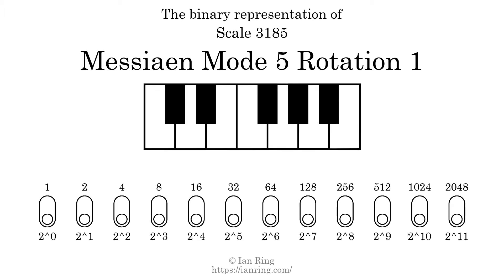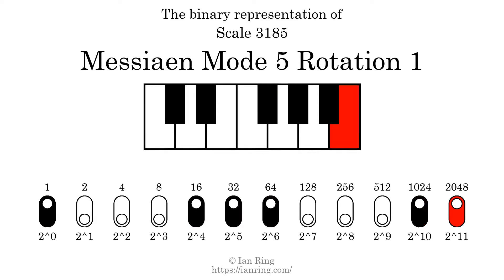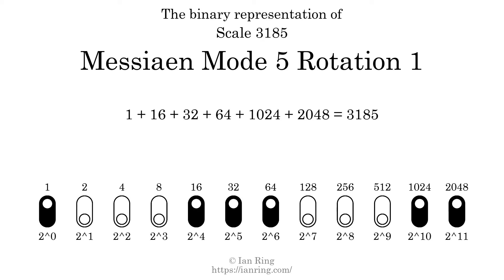The binary representation of this scale is determined by mapping tones of the scale to binary digits. Each binary digit represents a power of 2. To get the scale number, we add the powers of 2 together. The powers of 2 that are present in the scale, all added together, equals 3185. That is why the scale number, in decimal, is 3185. The scale number not only enumerates the scale with a unique index, but it also literally describes the tonal content of the scale.